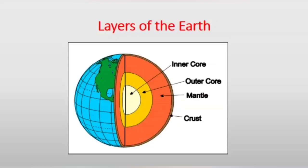Our Earth is made up of rocks and minerals in different layers. There are three layers of the Earth. The first one is the crust, second is the mantle, and third is the core. Crust is the outermost part of the Earth. This crust is mostly covered by sand, soil, water, and ice. So scholars, when we are walking, we are actually walking on the crust.